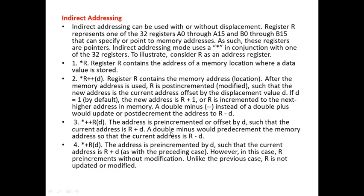A double minus would be the opposite of that. With *+R(D), the address is pre-incremented by D such that the current address is R plus D, as with the preceding case. However, the difference is that R pre-increments without modification — R is not updated or modified. It just temporarily moves on to the location R plus D.